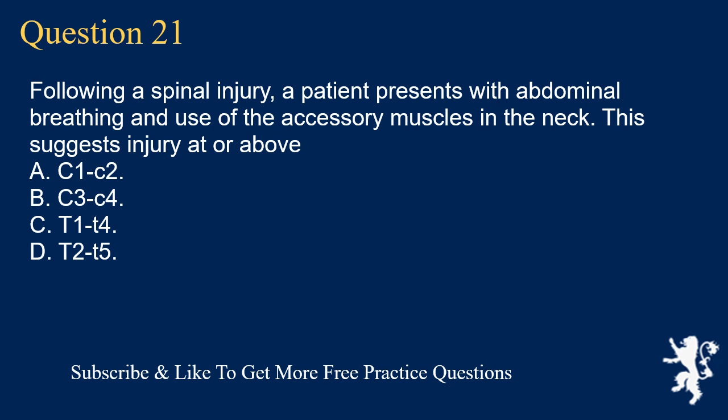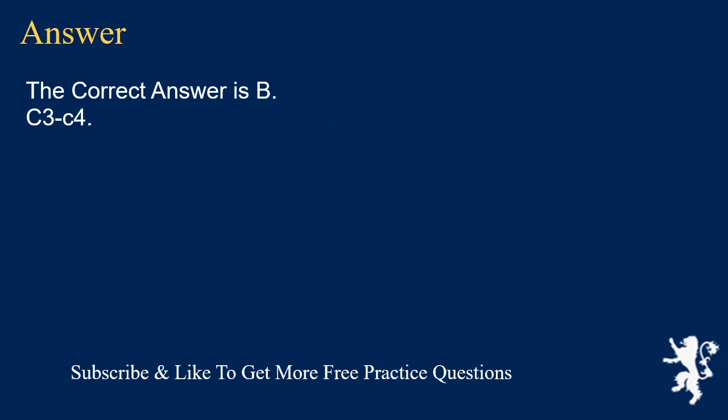Question 21. Following a spinal injury, a patient presents with abdominal breathing and use of the accessory muscles in the neck. This suggests injury at or above: A. C1-C2. B. C3-C4. C. T1-T4. D. T2-T5. The correct answer is B. C3-C4.